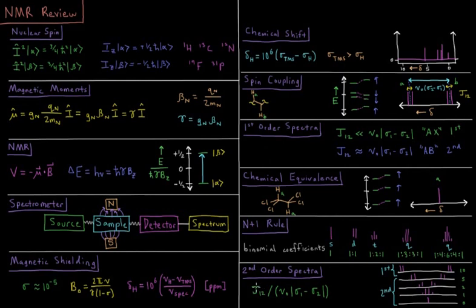And lastly, we look at second order spectra in the more difficult case, where our two peaks are not separated by many times more than their coupling constant, making it much harder to predict what that spectrum is going to look like in those intermediate values.